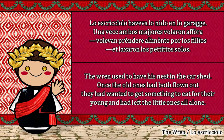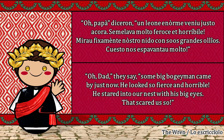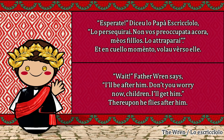The Wren: Lo escricciolo aveva lo nido en lo grage. Una vez que ambos mayores volaron afora, volevano prendere alimento por los filhos, y laxaron los petitos solos. Después de un palco, lo papá escricciolo tornaó a casa. «¿Qué passaba aquí?» Diceo. «¿Qué vos ha fatto de lo male, giovanettos? Estates todos espaventatos?» «Oh, papá», dijeron. «Un leone enorme veniú justo a cuora. Semelava molto feroce e orribile. Mirau fixamente nuestro nido con sus grandes ojos. Questo nos espaventáo molto.» «Comprendo», diceo lo papá escricciolo. «¿A dónde ha ido?» «Bene», diceron. «Vaideo per lá».